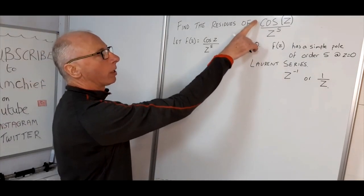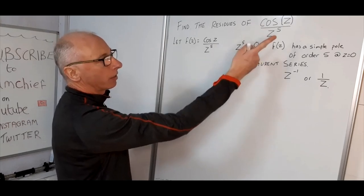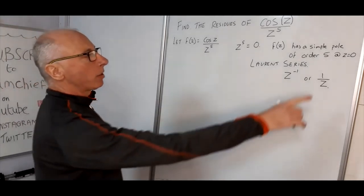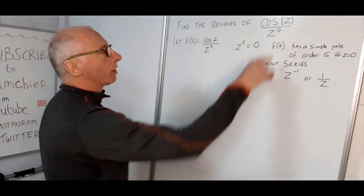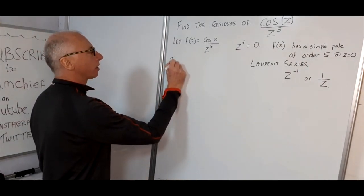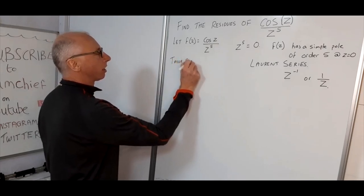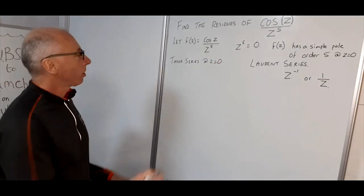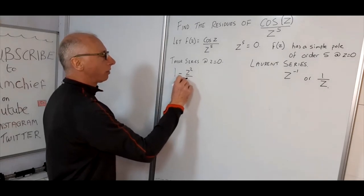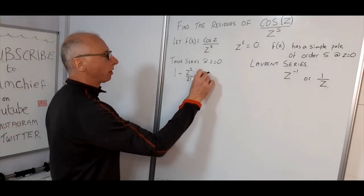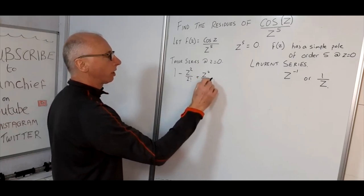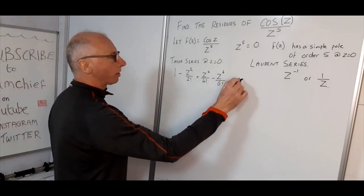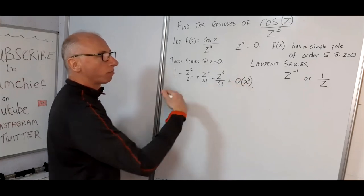Looking at this function, we know the Taylor series for cosine, and z to the 5 we can just put into our cosine Taylor series. As we are interested in the pole at z equals zero, the Taylor series at z equals zero is simply: 1 minus z squared over 2 factorial plus z to the 4 over 4 factorial minus z to the 6 over 6 factorial, and so on.